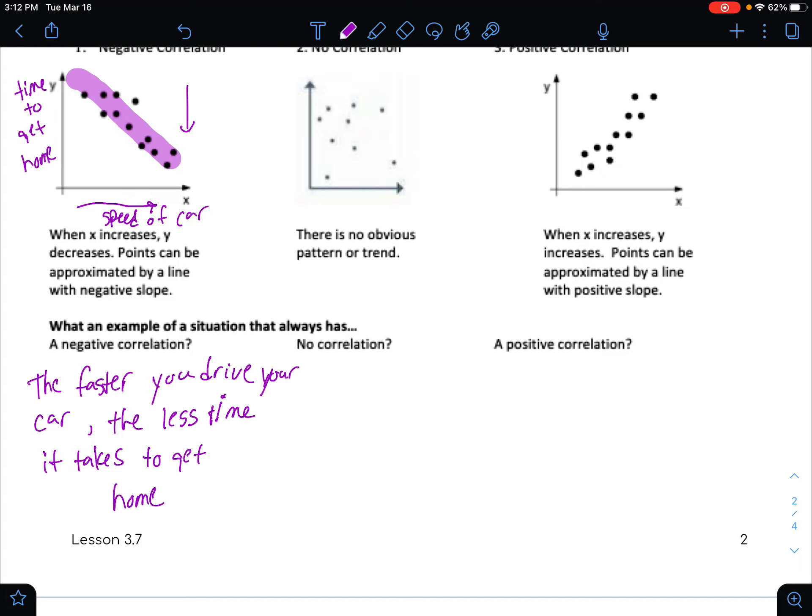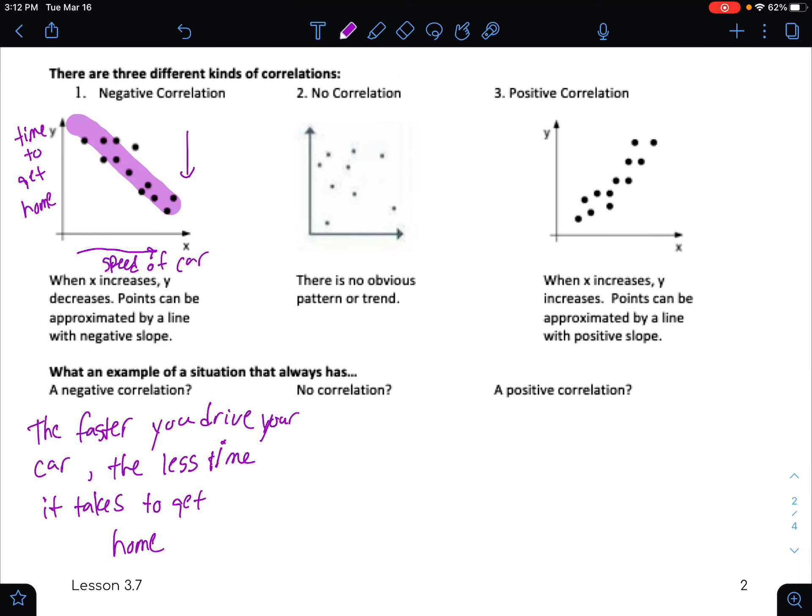That would be an example of a negative correlation that's going to be closer to that correlation coefficient of negative 1.